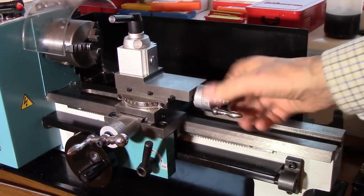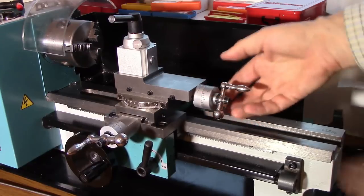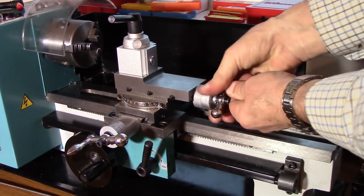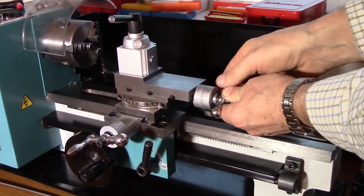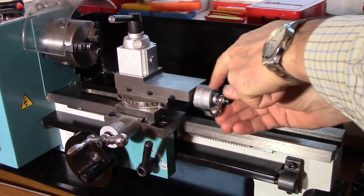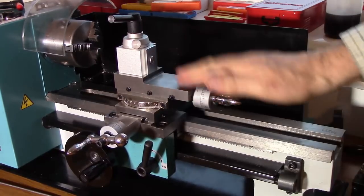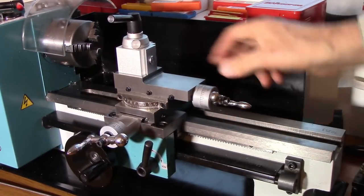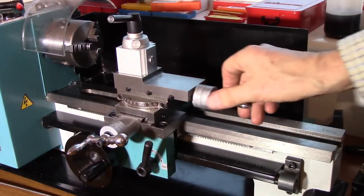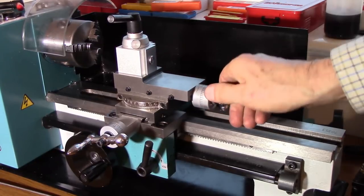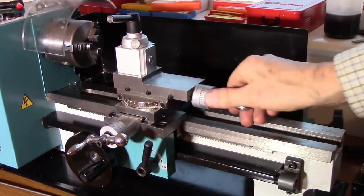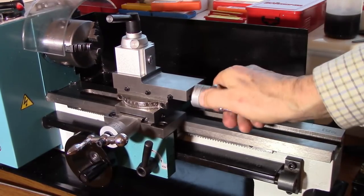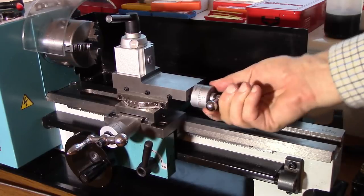And so whether or not this turns depends on whether this friction which is provided by a spring inside here. Whether that friction is greater or less than the friction between here and here as we try and push the top slide to the left. Obviously the tighter I do this up the more force between these two surfaces the greater this friction and that's why this micrometer dial is not turning as it should do.